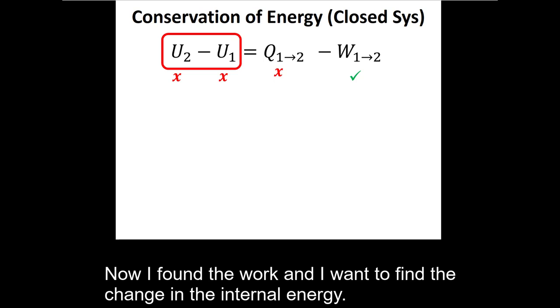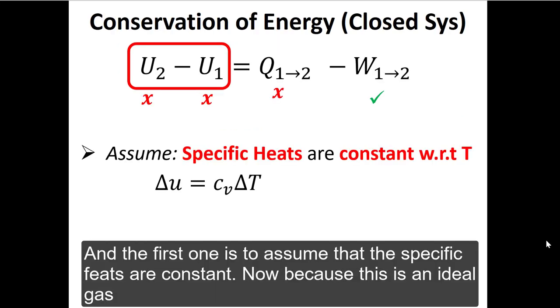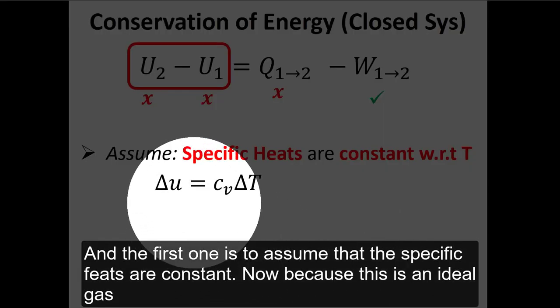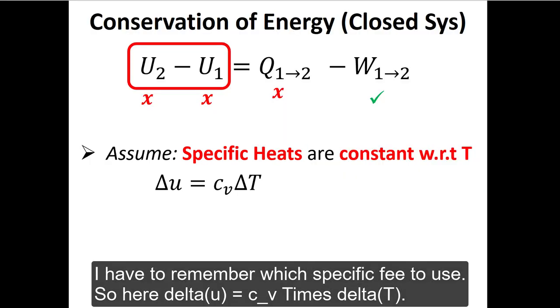Now I found the work and I want to find the change in internal energy. I have two options for doing this, and the first one is to assume that the specific heats are constant. Now because this is an ideal gas, I have to remember which specific heat to use. So here delta U is equal to CV times delta T.